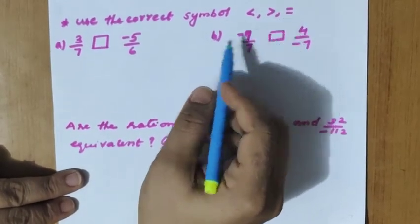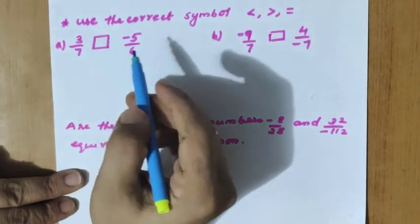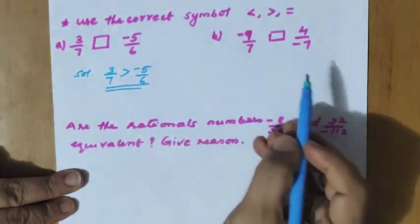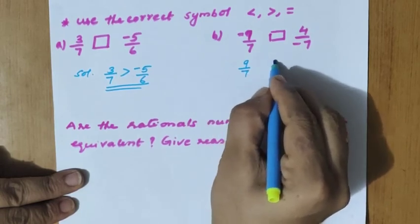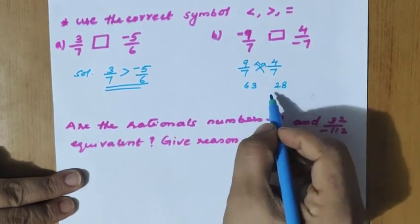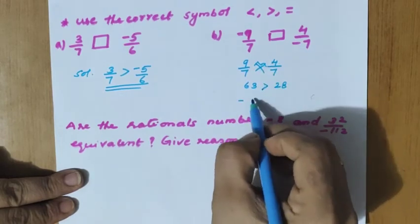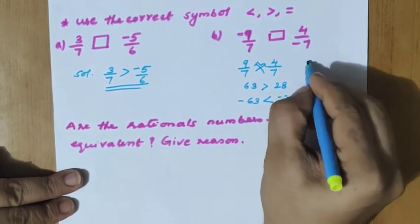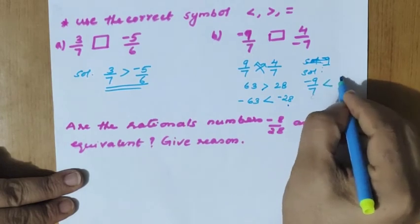Use the correct symbol — less than, greater than, or equal — between the rational numbers. 3 by 7 and minus 5 by 6: since a positive number is always greater than a negative number, 3 by 7 is greater than minus 5 by 6. For minus 9 by 7 and minus 4 by 7: using cross multiplication, 9 into 7 equals 63 and 4 into 7 equals 28. Since we apply the negative sign, minus 63 is less than minus 28, so minus 9 by 7 is less than minus 4 by 7.